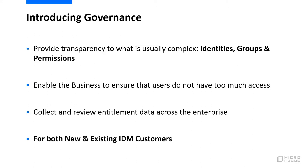One of the ways that we do that is we can provide a translation layer around what is usually very convoluted. Sometimes we run into permissions in downstream systems that have abbreviations, have numbers, and things like that in them. As a part of bringing in the permissions into the identity governance solution, we can curate them and make them much easier to understand. We have to collect and review entitlement data across all of the applications in your enterprise and pull them into the environment.